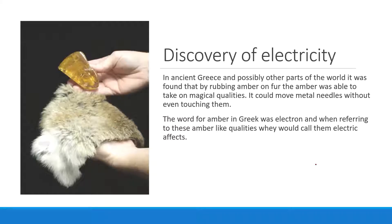I say 'magical' because they couldn't explain it — it could move things without even touching them. Back then it would probably move tiny feathers or bits of pollen without contact, and of course if you can move something without touching it, that's basically magic. The word for amber in Greek was 'electron,' and when referring to these amber qualities they would call them electric effects — that's essentially where the word electron comes from.